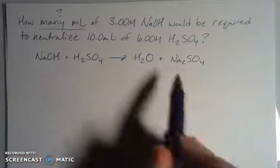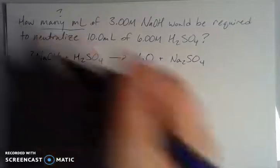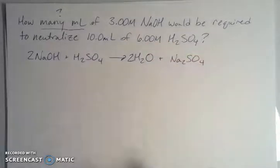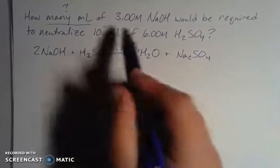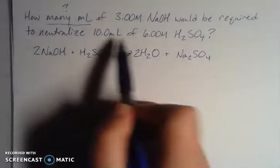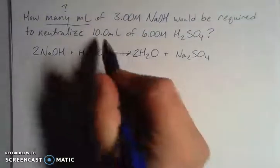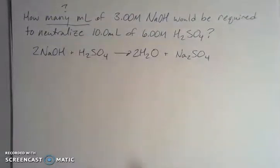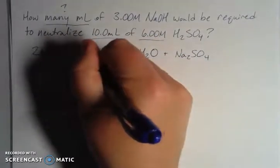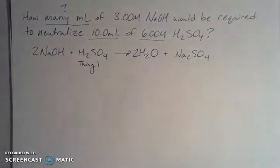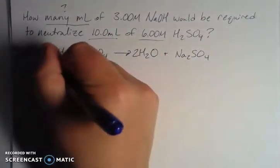I need two sodium hydroxides and two hydrogens, meaning two waters — so the equation is balanced as 2NaOH + H₂SO₄ → 2H₂O + Na₂SO₄. Thinking in 'thing one / thing two' terms: thing one is the substance I'm given both volume and concentration information about, which is H₂SO₄. Thing two is what the question asks about — I'm only given concentration data for NaOH, so that's my thing two.